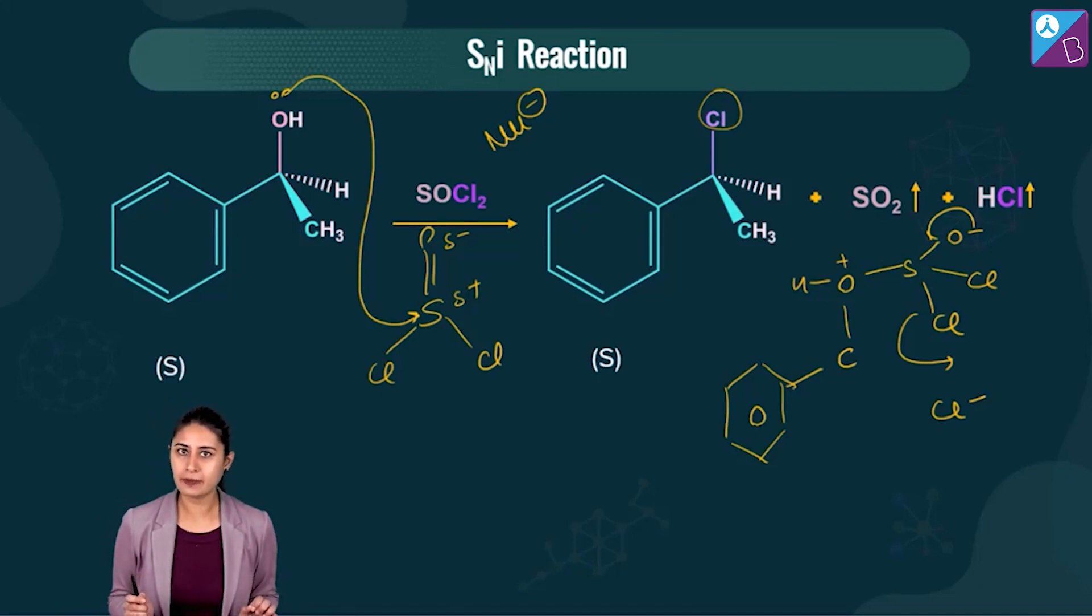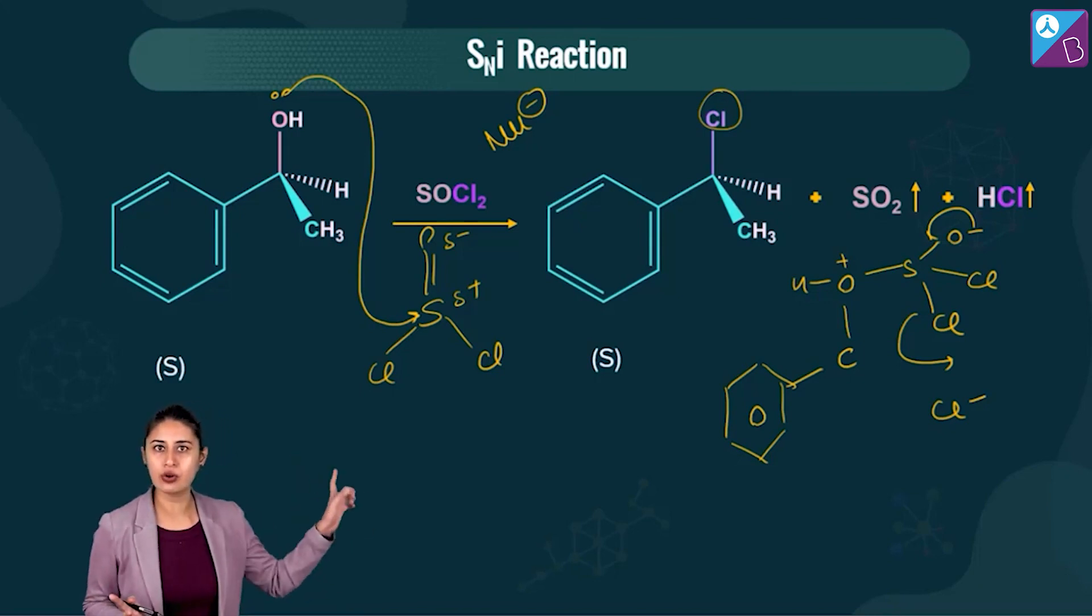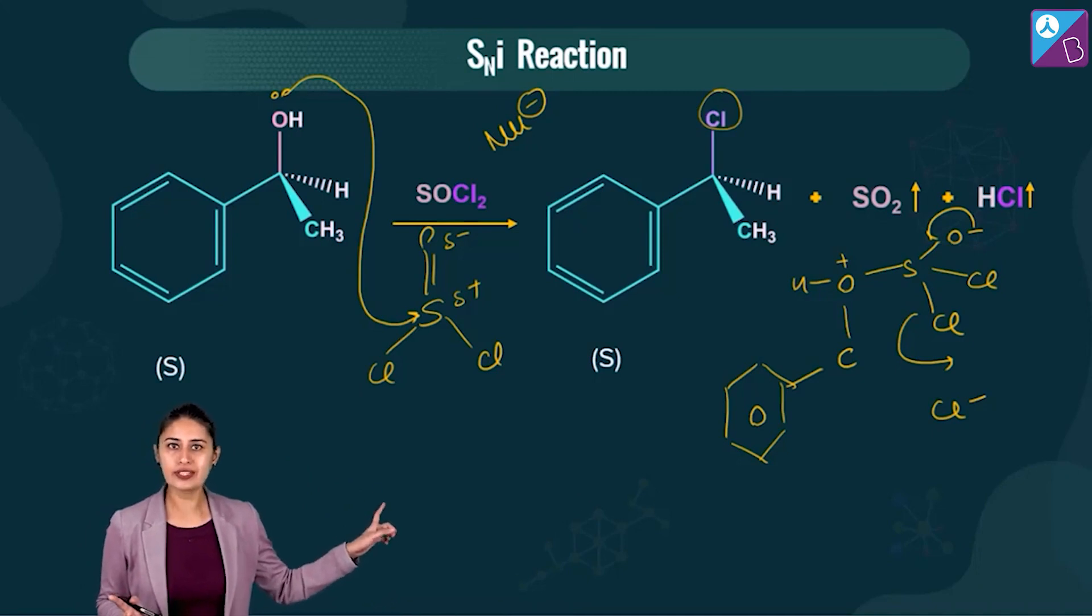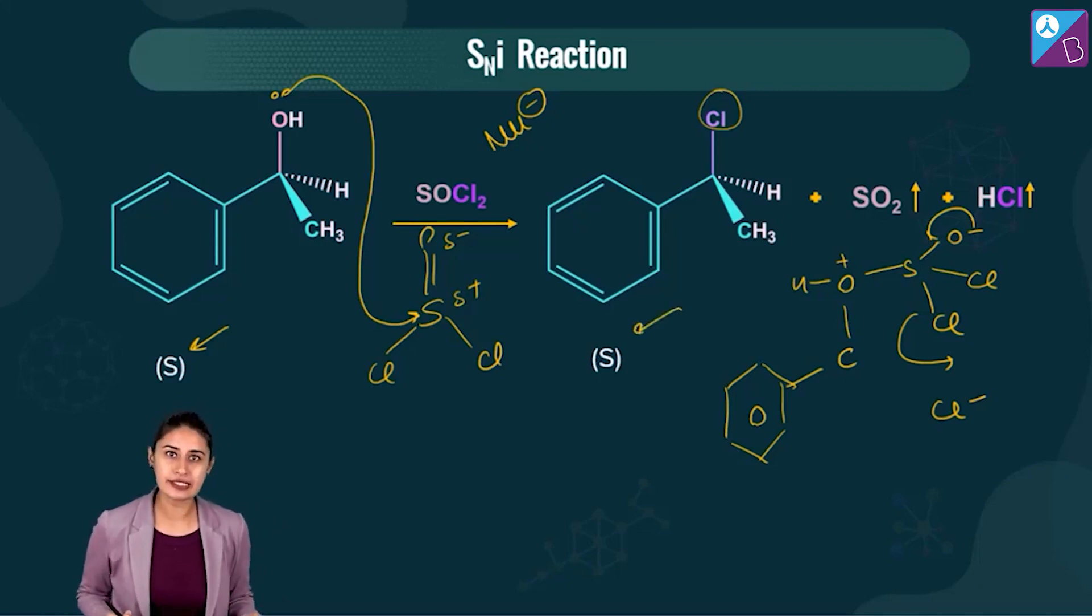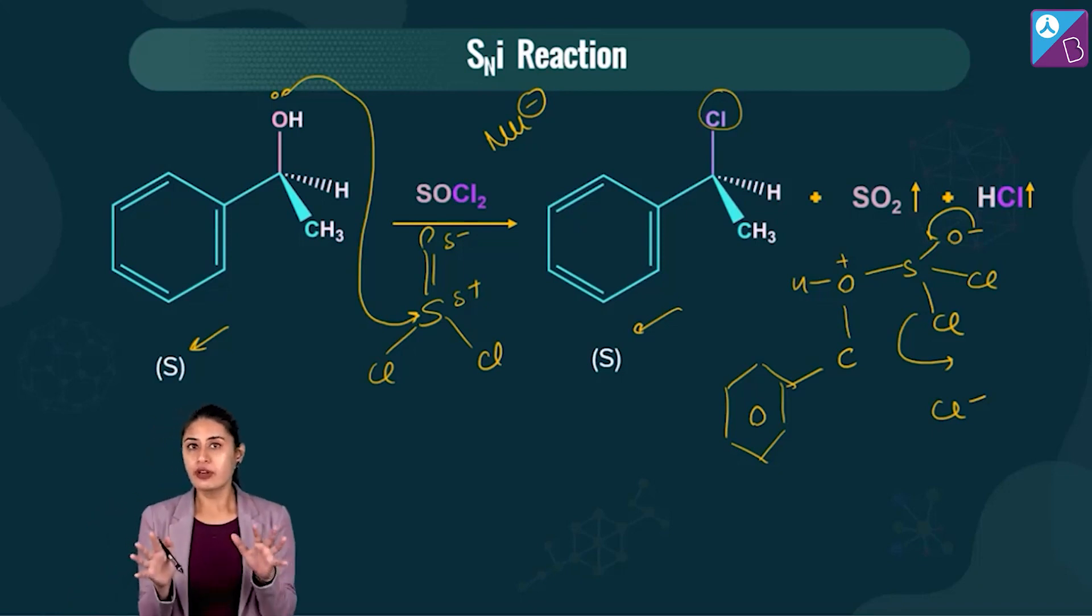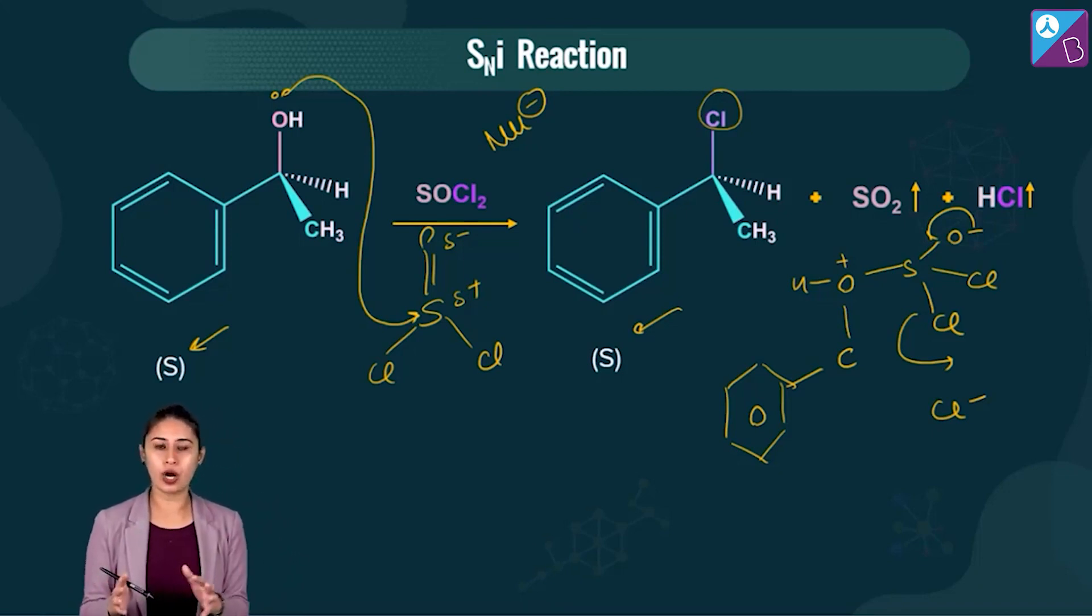There is substitution happening. The major important reaction that you need to know is this reaction of alcohol with SOCl2 and you're getting the product which is a halide product. If we are starting with a configuration let's say S and talk about the stereochemistry of SNI also.